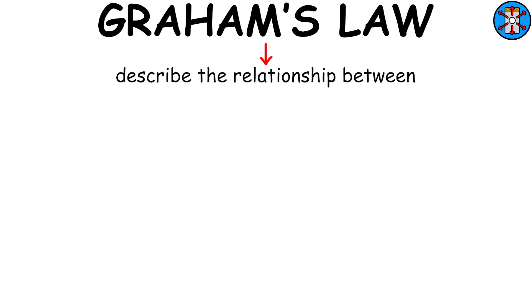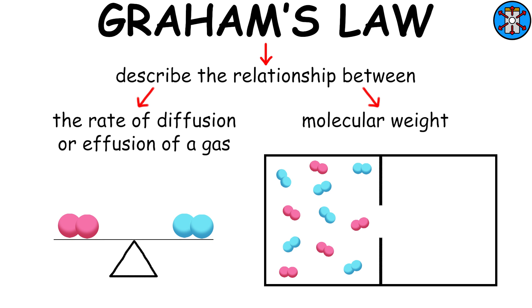Graham's Law describes the relationship between the rate of diffusion or effusion of a gas and its molecular weight. If one gas has a molecular weight four times that of another, it will diffuse at half the rate through a small hole.